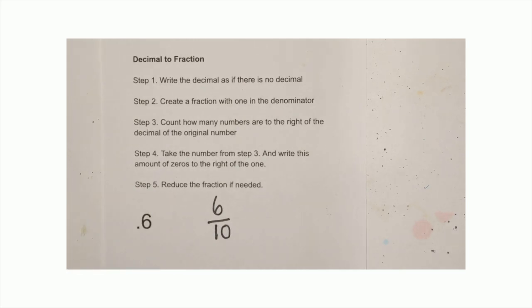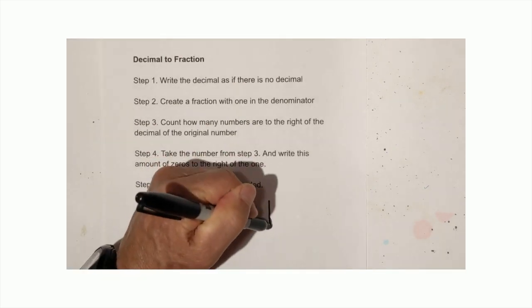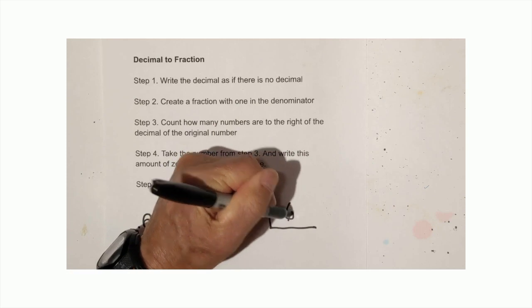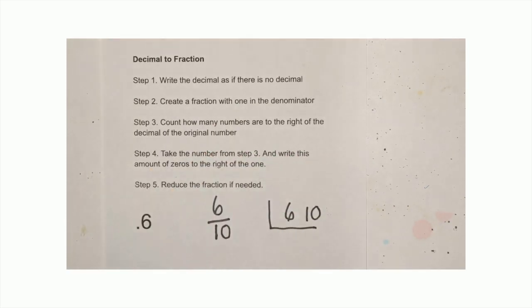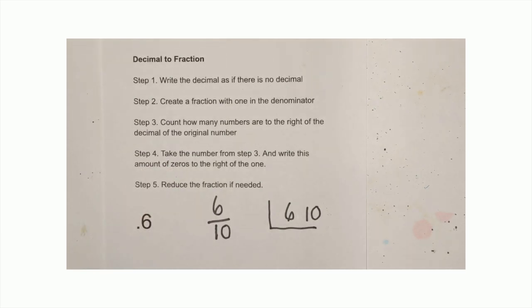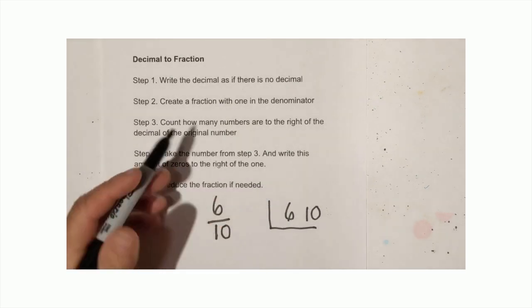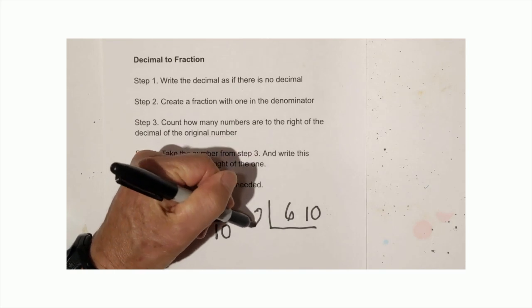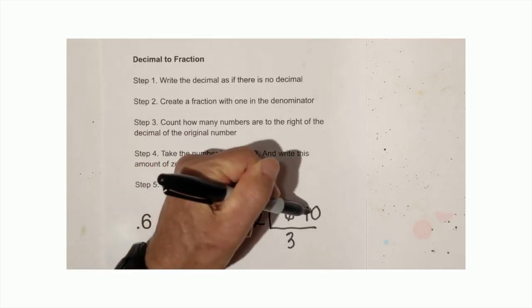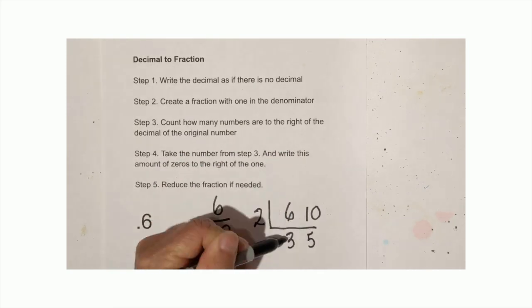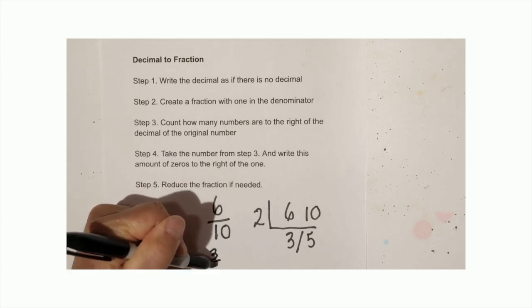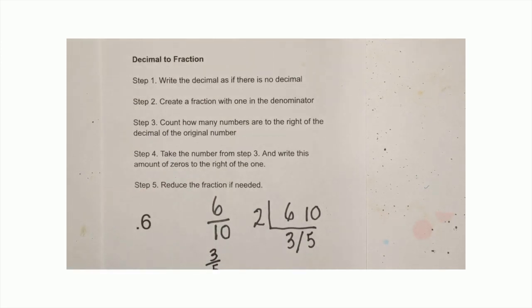Now I can reduce this. Here's what I like to do — I like to create a little chart because it keeps you a little bit more organized. You don't have to do this, you can just divide, but this makes sense to me. I know that six and ten are both divisible by two. Two goes into six three times and two goes into ten five times. These are both prime numbers so it's reduced — it is three fifths.